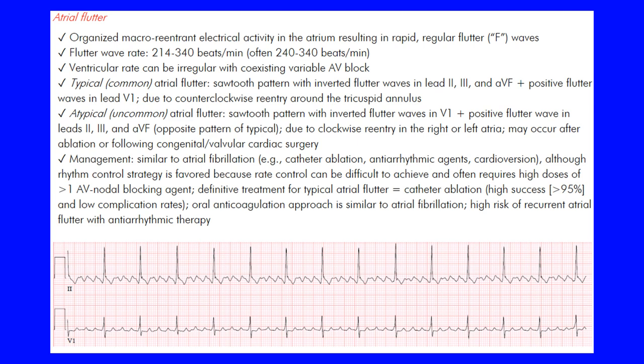Atrial flutter is an organized macro re-entrant electrical activity in the atrium. It produces rapid, regular flutter waves — called F-waves — and this is a rapid regular rhythm often originating in the right atrium, especially for the typical form. These flutter waves tend to occur at a rate between 240 and 340 beats per minute, often around 300 beats per minute.